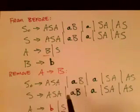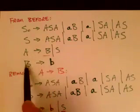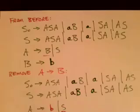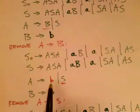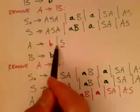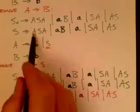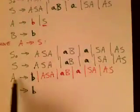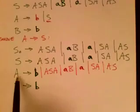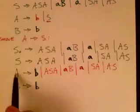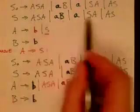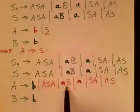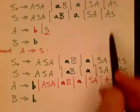We have another unit rule: A goes to S. S goes to five right-hand sides, so we add new rules for those. A now goes to: B (which it went to before), plus ASA, aB, a, SA, and AS — the five things S goes to. This removes the unit rule A goes to S.